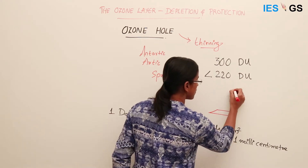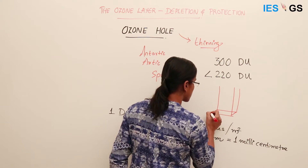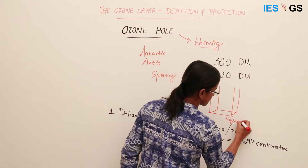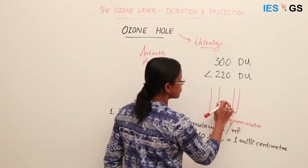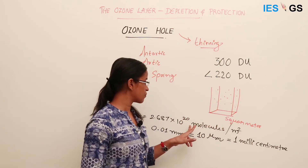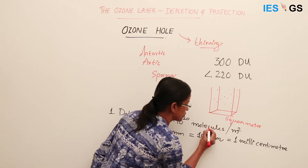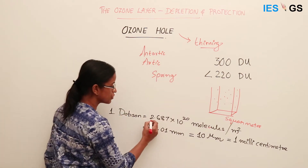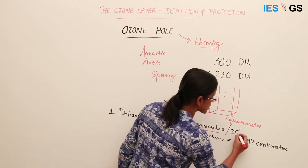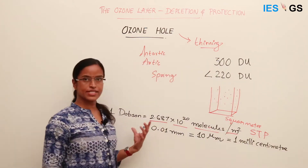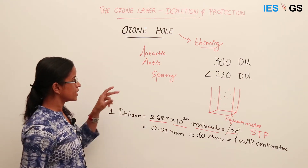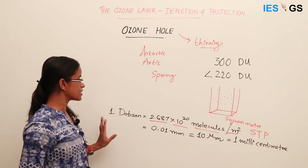Say we have taken a square meter on the ground surface — the number of ozone molecules in the air column above it is measured. One Dobson unit equals 2.687 × 10²⁰ molecules per meter square at standard temperature and pressure. We saw that usually it is 300 Dobson units.